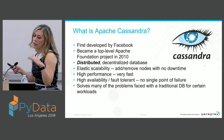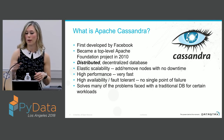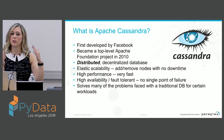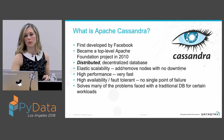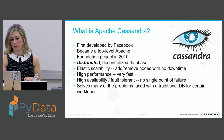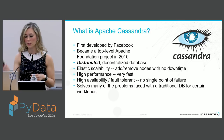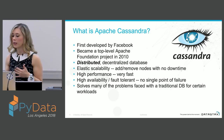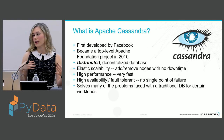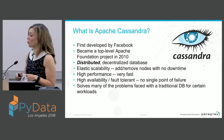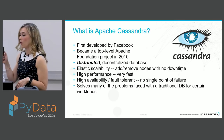So what is it exactly? It is a distributed, decentralized database. This is a distributed database — you use it when you have large amounts of data, not small amounts. It's elastically scalable; you can add or remove nodes with no downtime. There's high performance, it's very fast. High availability and fault tolerant — there is no single point of failure. And it solves many of the problems faced with traditional databases for certain types of workloads, though it doesn't fit every use case.